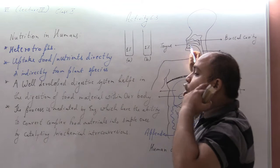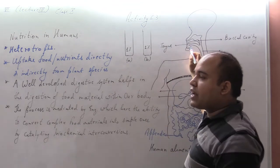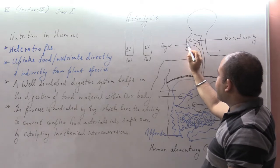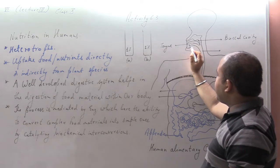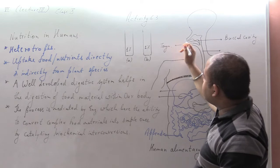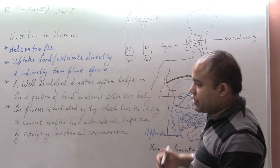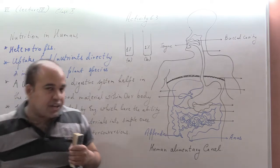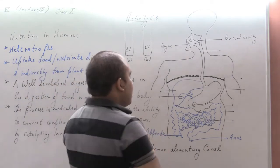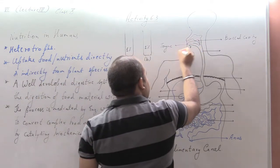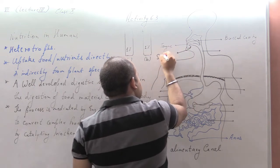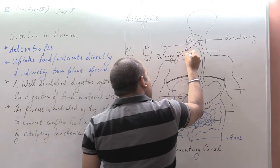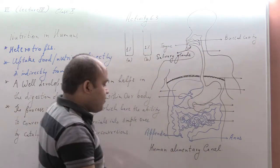Now let us look at the different components of the digestive system. The first component is the buccal cavity — the opening of the mouth. In this cavity, we have a tongue, and beneath the tongue there are salivary glands which have the ability to secrete enzymes. These are referred to as salivary glands.